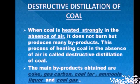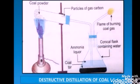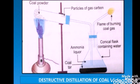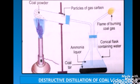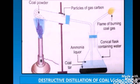Let us understand this process through an activity. For this activity, we need the following apparatus: a Bunsen burner, coal powder, a dust tube, glass tubes, and a conical flask. We will place coal pieces in a dust tube and seal it with a cork so that air will not enter into it.